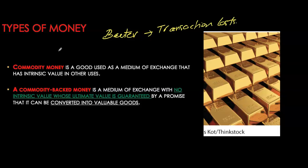Commodity money then evolved into commodity-backed money. As you can imagine, commodity money is not easy to carry or transport, so we saw the evolution of paper currency. Paper currency is commodity-backed money that has no intrinsic value of its own — it's just a piece of paper — but it is backed by some commodity, guaranteed by a promise that it can be converted into an equivalent amount of a valuable good, primarily gold or silver. We had commodity-backed money, or the gold standard, all the way into the 1930s.